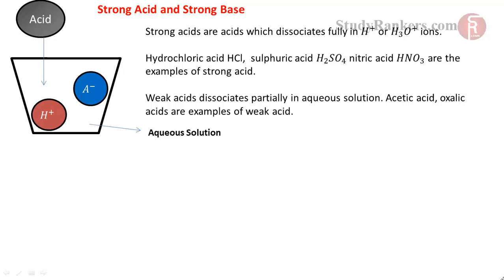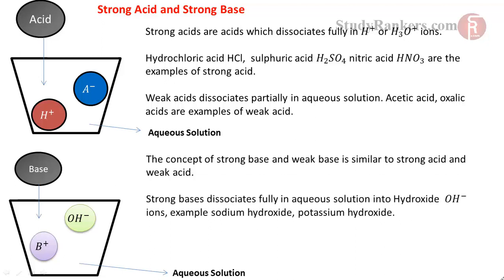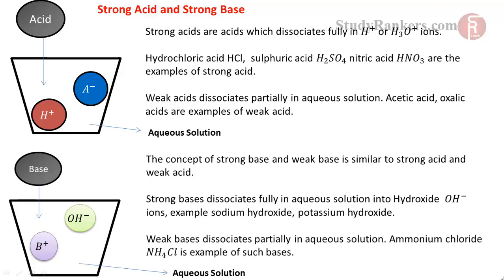The concept of strong and weak base is similar to that of acids. Strong bases dissociate fully in aqueous solution into hydroxide OH⁻ ions — for example, sodium hydroxide and potassium hydroxide. Weak bases dissociate only partially in aqueous solution; ammonium chloride is an example of such bases.